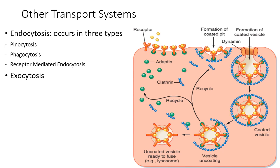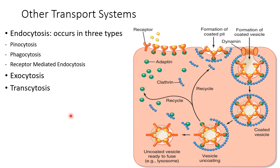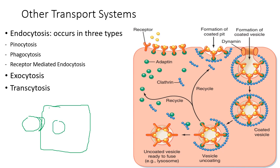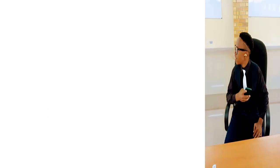Exocytosis is the opposite of endocytosis — a substance from inside the cell is moved out of the cell. Transcytosis is a combination of both: a substance is endocytosed into a cell and then transported to the opposite side of the cell membrane and released by exocytosis.